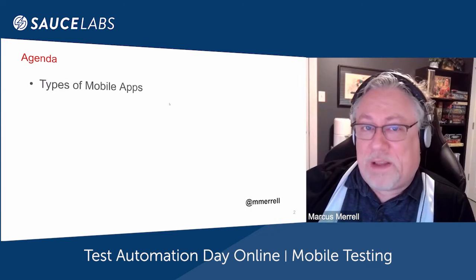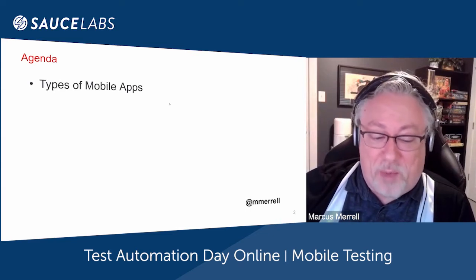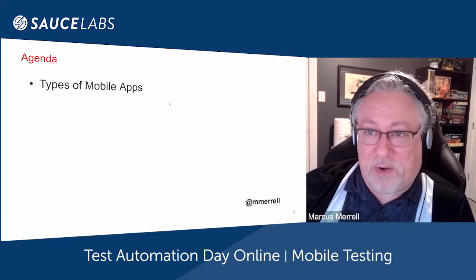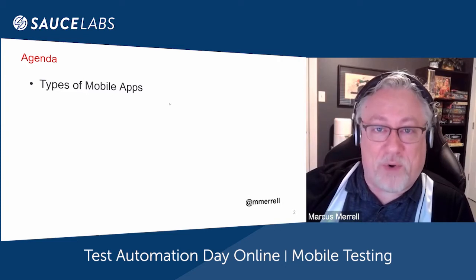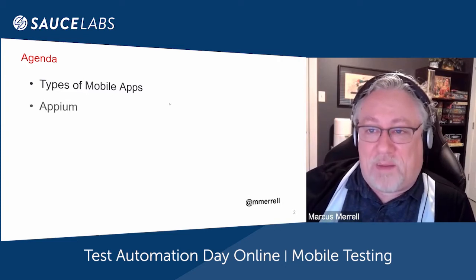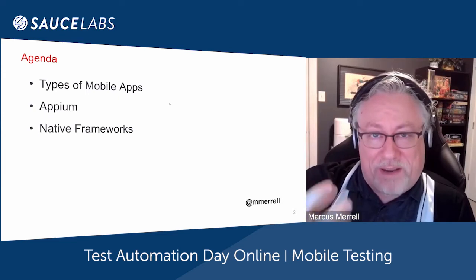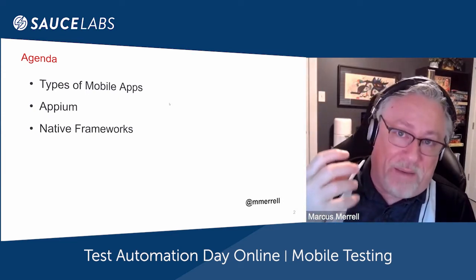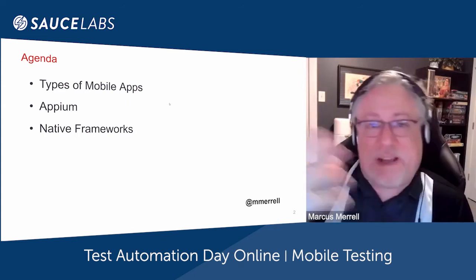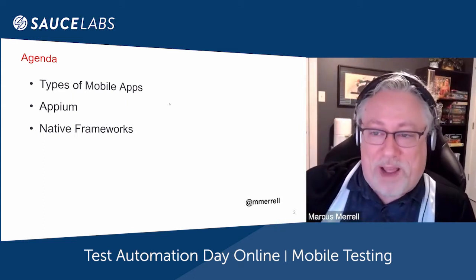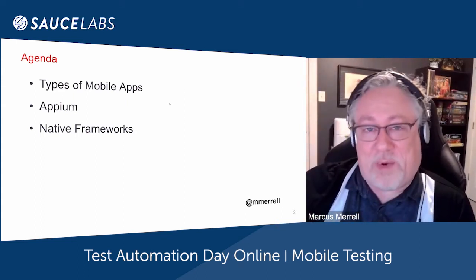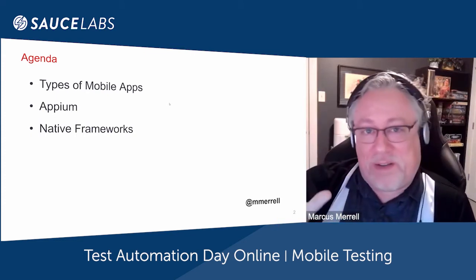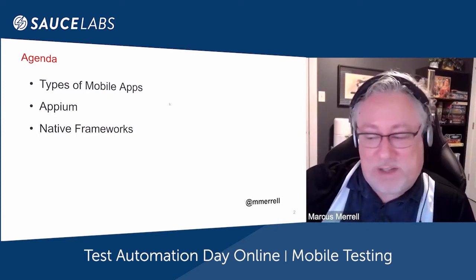So let's talk about the different types of mobile apps. We're going to talk about Appium and how it works underneath the covers so you can get a sense of the issues, the goods and the bads of what's going on with Appium, and I'm going to do the same thing with native frameworks — explain how they work, why they work the way they do, and how that could be an advantage or a disadvantage depending.